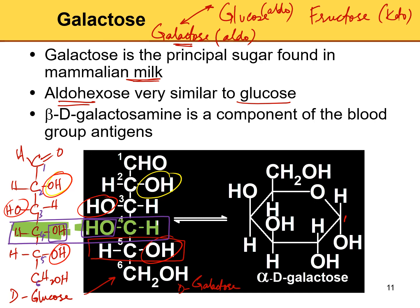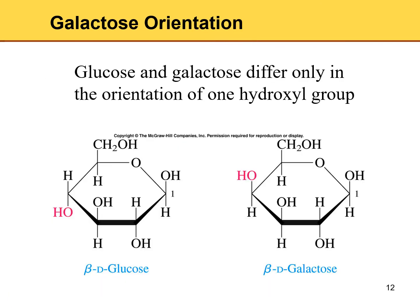For galactose, carbon numbering 1, 2, 3, 4, 5, 6: we go up, then crisscross, but at carbon number 4 we flip the OH to the other side compared to glucose. That gives the galactose structure. Please make sure you know how to draw both glucose and galactose and understand the difference between them.